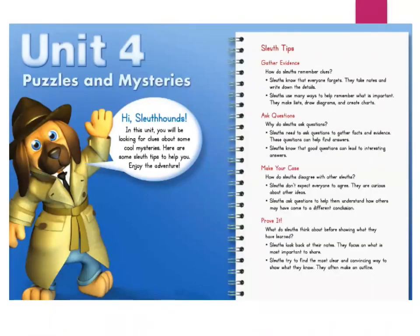Last week we thought about some mysteries and puzzles throughout history, like the Lost Colony of Roanoke, which got me thinking about the Lewis and Clark story we read in social studies — how they had to explore the area bought in the Louisiana Purchase and bring back specific information to President Jefferson. There are even mysteries and puzzles in our everyday life. Today we're going to be sleuths and read more about some puzzles we can figure out. To be a good sleuth or detective, we must gather evidence, ask questions, make our case, and prove it.